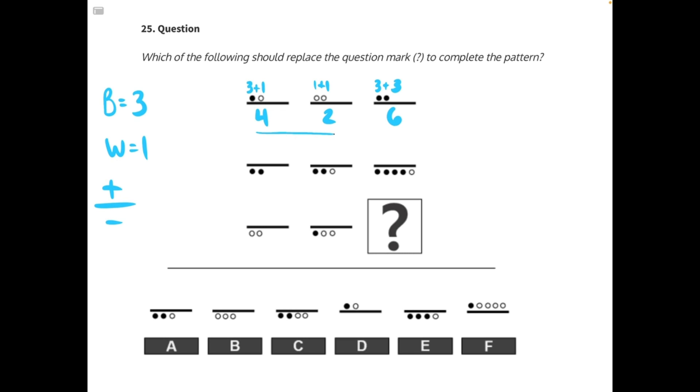And then we can see a pattern. 4 plus 2 gives us 6. So we can add our elements horizontally in order to find the element in our third column. Let's try that in row 2.